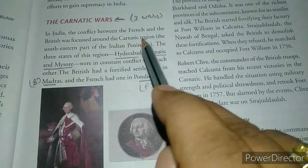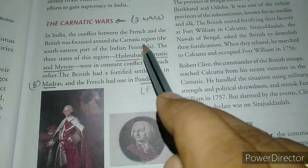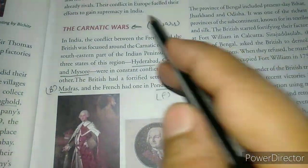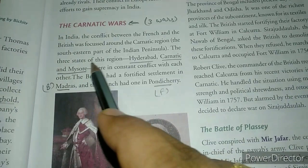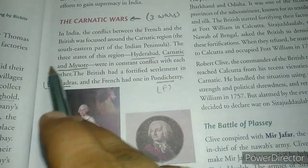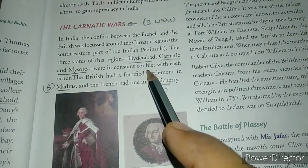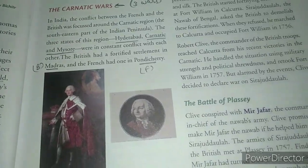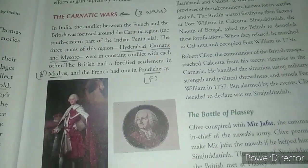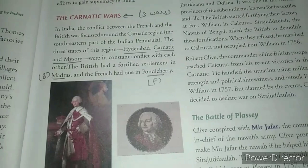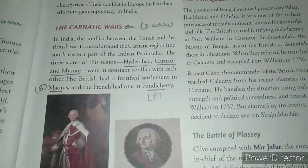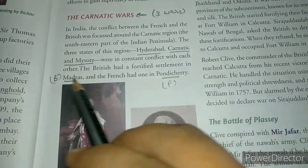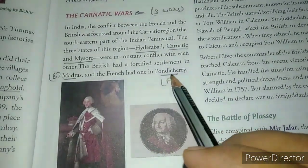In India, the conflict between the French and the British was focused around the Carnatic region — the southeastern part of the Indian peninsula. The three states of this region — Hyderabad, Karnatak, and Mysore — were in constant conflict with each other. Their rulers used to fight against one another. The British had a fortified settlement in Madras and the French had one in Pondicherry.